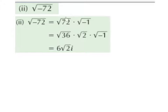Now, 72 we can further break down to be the square root of 36 multiplied by the square root of 2, because 36 times 2 is 72. The reason for doing this is that 36 is a square number, and we want to try and find square numbers whenever we can. The square root of 36 is 6. The square root of 2 we cannot break down anymore, so we leave it as the square root of 2.